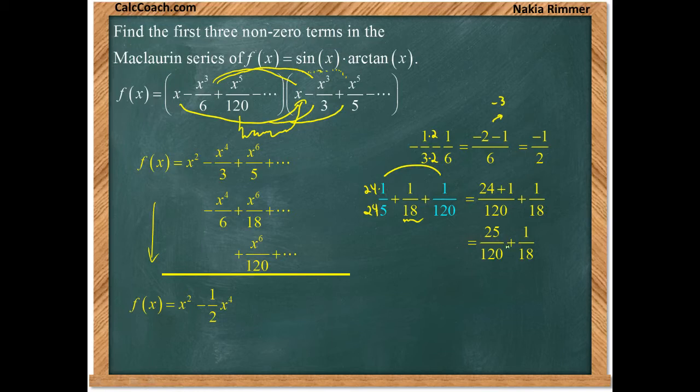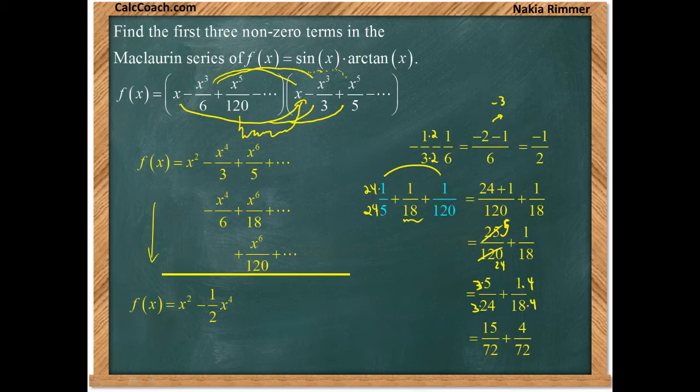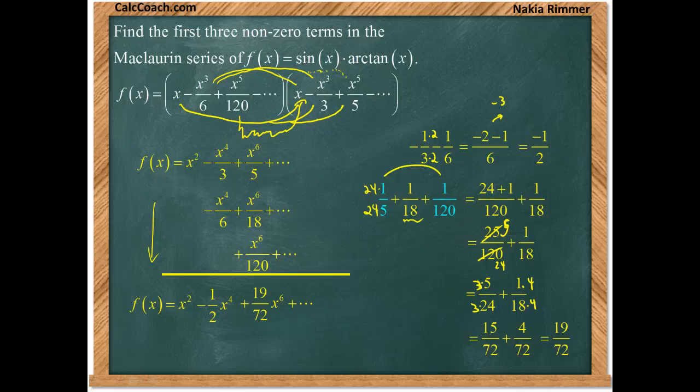I still have the one over 18, but what's nice about the 25 over 120 is that it reduces by a factor of five. So we'll have five over 24. And now it's the common denominator between 24 and 18 and that's going to be 72. 18 times 4 and 24 times 3. So we'll have 15 of them and we'll add on four of them for a grand total of 19 of them. And that's your coefficient on x to the sixth, 19 over 72.